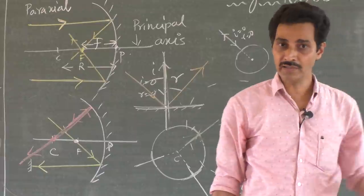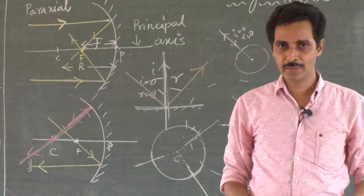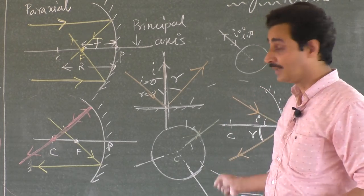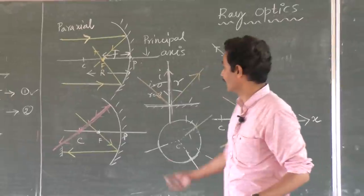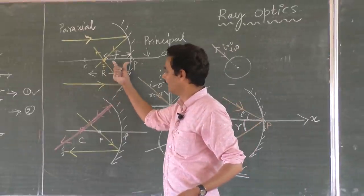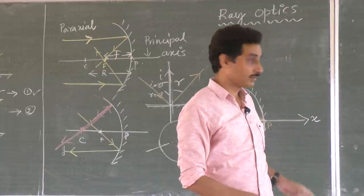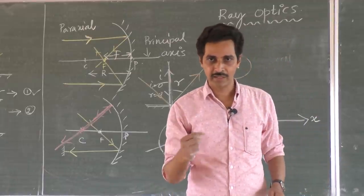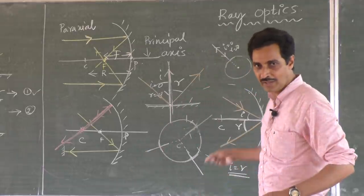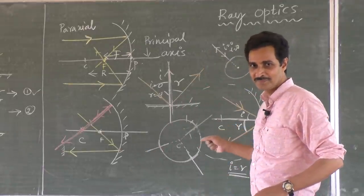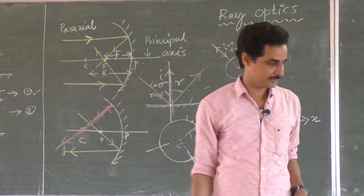This is about the concave mirror. In the same way, we have to discuss the convex mirror, see how images are formed, and derive the relation between radius and focal length — one by one. These are the basic things. We will discuss the convex mirror in the next session. Thank you.